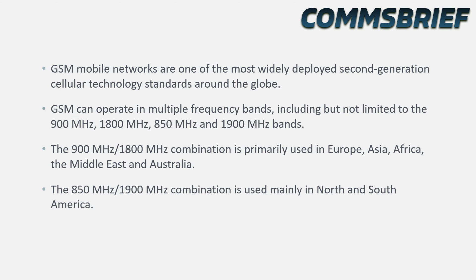GSM mobile networks are one of the most widely deployed second generation cellular technology standards around the globe. GSM can operate in multiple frequency bands including the 900 MHz, 1800 MHz, 850 MHz and 1900 MHz frequency bands. The 900 and 1800 MHz combination is mainly used in Europe, Asia, Africa, Middle East and Australia, and the 850 and 1900 combination is mainly used in North and South America.